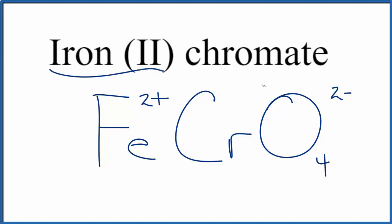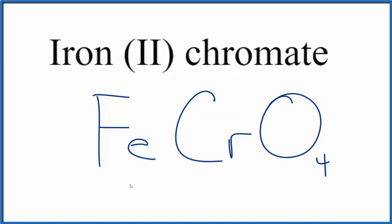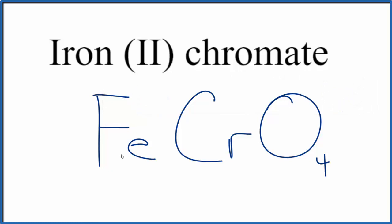So iron 2, that's a transition metal, then we have this polyatomic ion. So these charges here, they need to add up to zero. 2+, 2-, that adds up to zero. So this is the formula for iron (II) chromate, Fe CrO4.